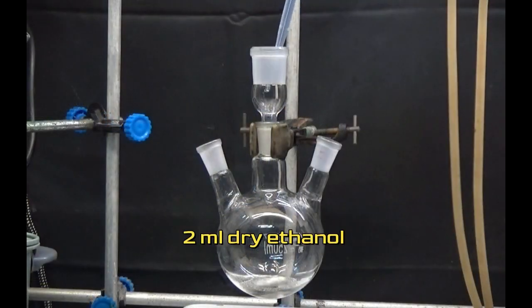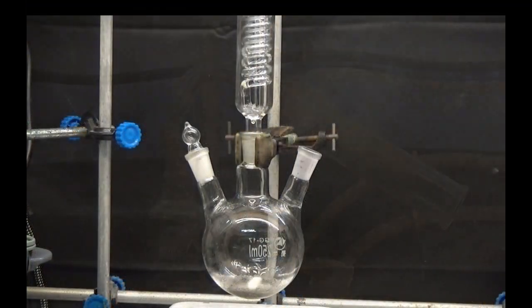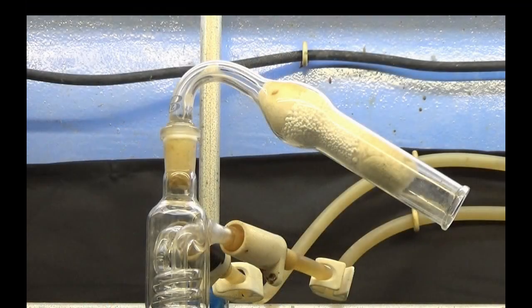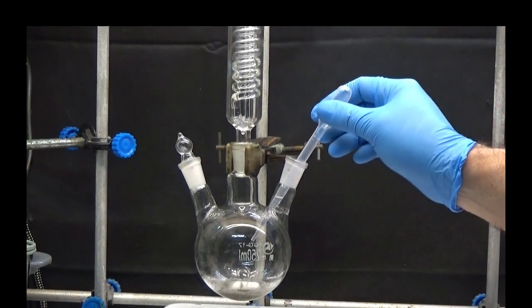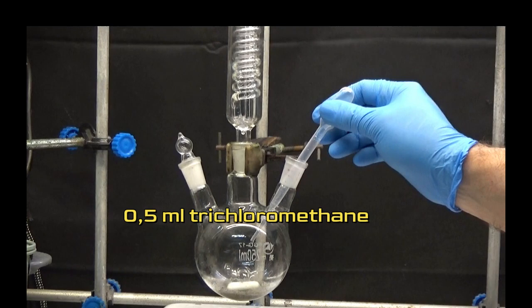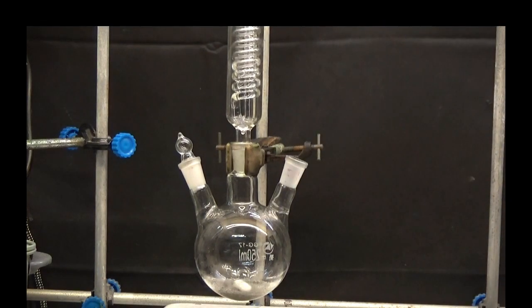Add 2 milliliters of dry ethanol and stir. Assemble the reflux condenser protected from moisture with a tube of calcium chloride. Add 0.5 milliliters trichloromethane and install one addition funnel protected with calcium chloride.